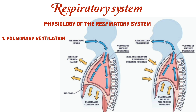This increases the volume of the thoracic cavity and lowers the air pressure inside the lungs, causing air to flow inward. During expiration, the diaphragm and the intercostal muscles relax, the chest cavity decreases in volume, pressure inside the lungs increases, and air is pushed out. At rest, expiration is mostly a passive process, but during exercise it becomes active due to contraction of the abdominal and intercostal muscles.